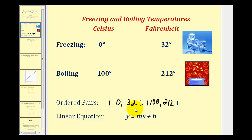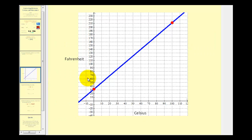Now that we have two points on a line that relates Celsius to Fahrenheit, we can determine the equation of the line by finding the slope and the y-intercept. We're going to use the point (0, 32) and the point (100, 212) to determine the equation of this line, which we can use to convert between Celsius and Fahrenheit.